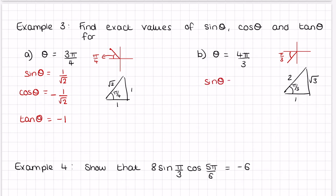Sin θ = √3/2, but in the third quadrant sine is negative (sine represents the y-coordinate, and all y's are negative in quadrant 3), so sin θ = −√3/2. Cos θ = 1/2, but cos is also negative in the third quadrant, so cos θ = −1/2. Tan θ is opposite over adjacent = √3, and tan is always positive in that quadrant.